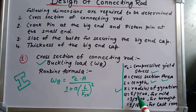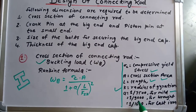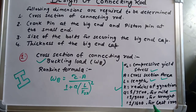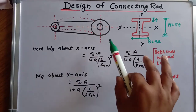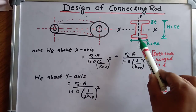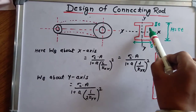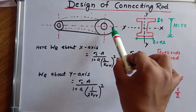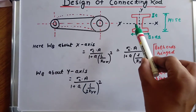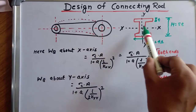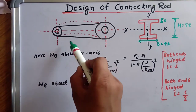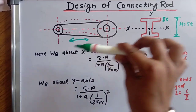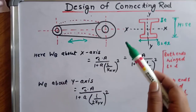The constant a has different values for different materials: 1/7500 for mild steel, 1/9000 for wrought iron, and 1/1600 for cast iron. This is the I-section cross-section view of the connecting rod. The buckling load Wb acts in the direction of movement of the connecting rod, which reciprocates in this direction.